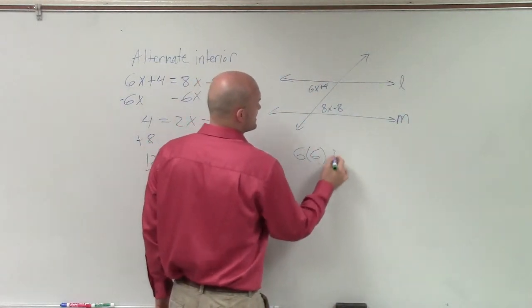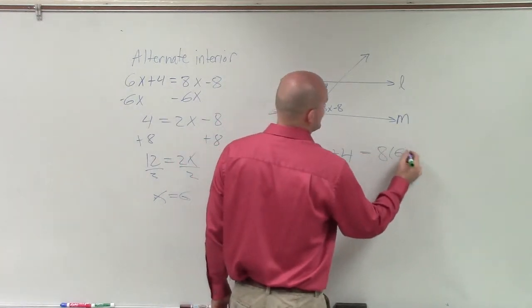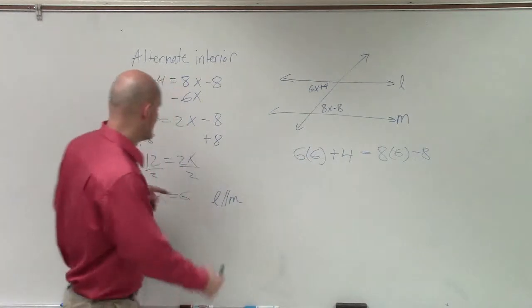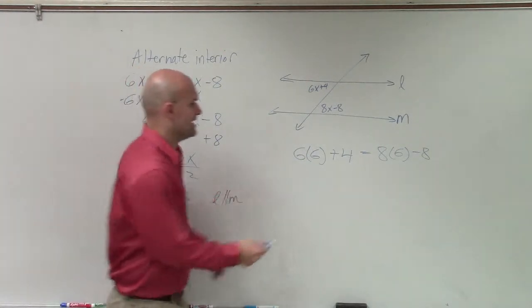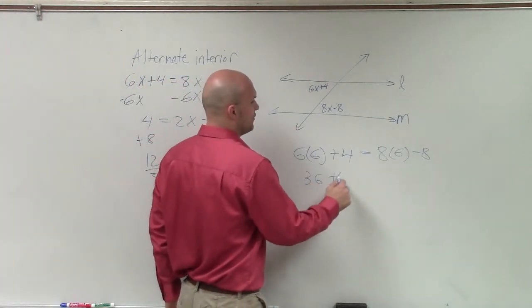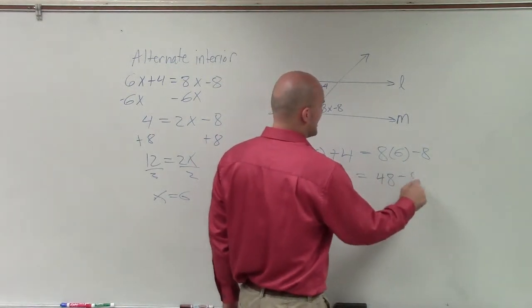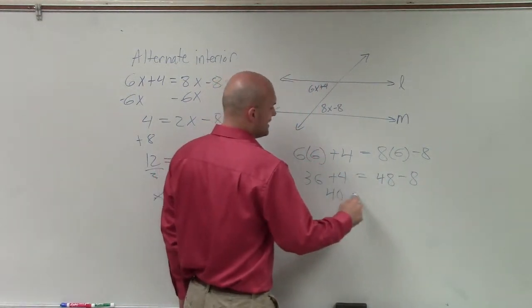6 times 6x plus 4 is equal to 8 times 6 minus 8. Right? When x equals 6, what I just solved, what do we get? We get 36 plus 4. Over here, we get 48 minus 8. Here, we get 40 equals 40.